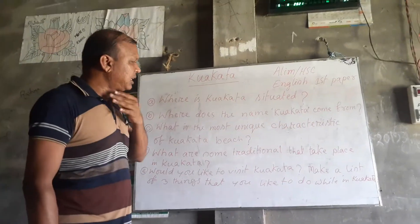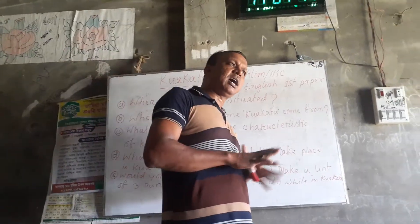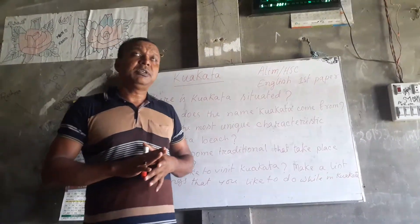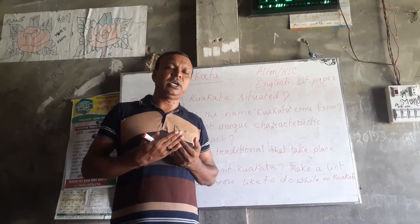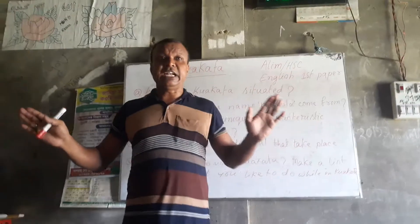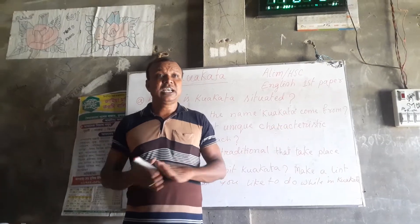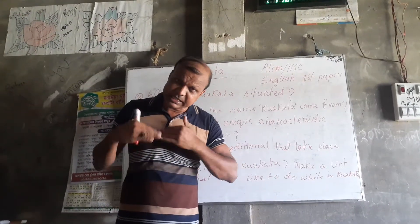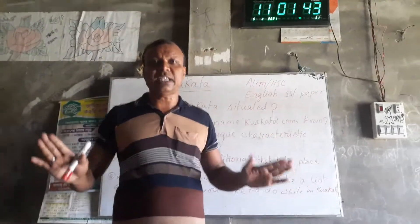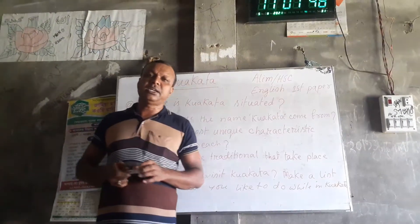What is the most unique characteristic of Kuwakata Beach? The most unique characteristic of Kuwakata is that if you visit Kuwakata, you can enjoy the scenery of both sunrise and sunset. There is no other such scenery in the world. At the same time, you can enjoy both sunrise and sunset at Kuwakata. That is why it is called a unique spot — not only in Bangladesh, but in the whole world.